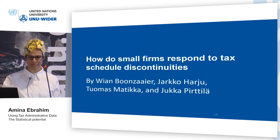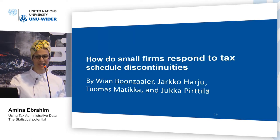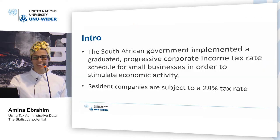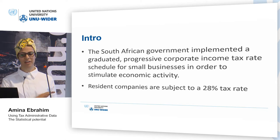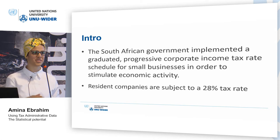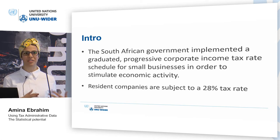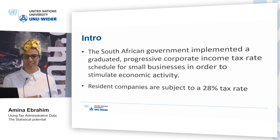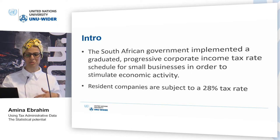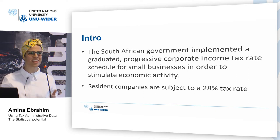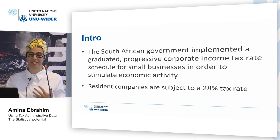The other paper I want to touch on is how small firms respond to tax schedule discontinuities. In the South African context, firms that are resident in South Africa are subject to a flat rate of 28 percent tax, but small firms have a graduated progressive corporate income tax schedule. The idea behind this was a lower tax rate to stimulate small businesses to grow, increase economic activity, and create jobs.